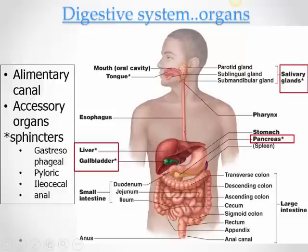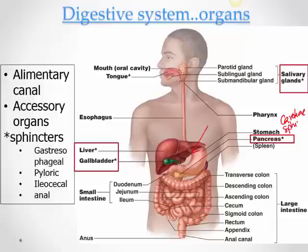There are four main sphincters. Where the esophagus opens into the stomach, there is the gastroesophageal sphincter, also known as the cardiac sphincter. Where the stomach opens into the duodenum, the first part of the small intestine, there is the pyloric sphincter to ensure food goes from the stomach into the duodenum and not the other way.